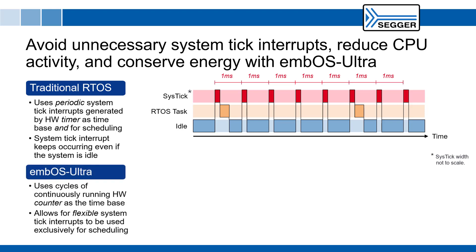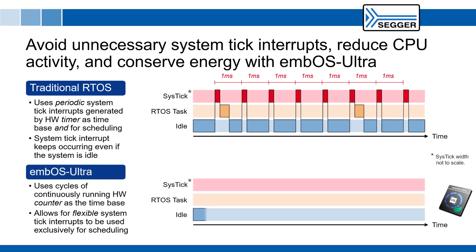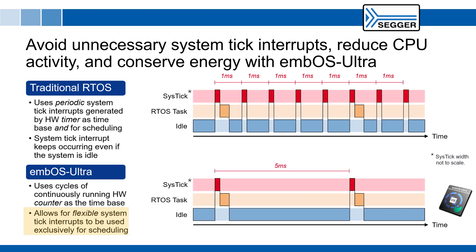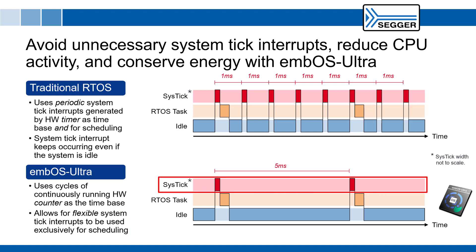Seger's new MBOS Ultra real-time operating system uses the cycles of a continuously running hardware counter as the time base for the RTOS. This means that the hardware timer can now be used in single-shot mode to generate flexible system tick interrupts just for scheduling, which are specifically configured by the operating system to occur only when a time-based action is required. This avoids unnecessary system tick interrupts, reduces CPU activity, and thereby conserves energy.